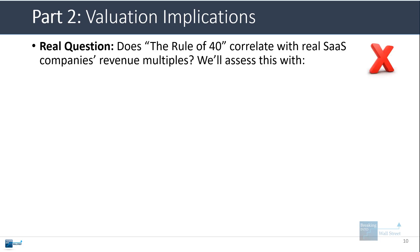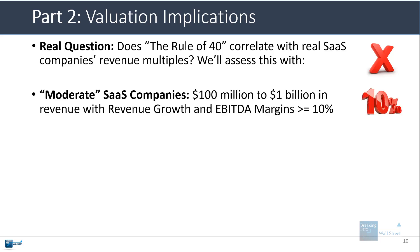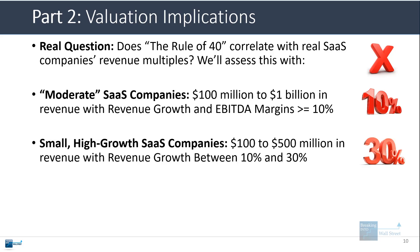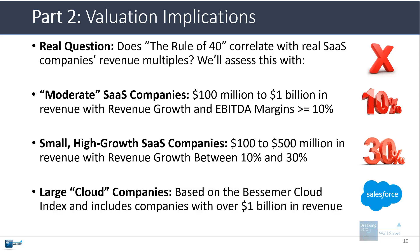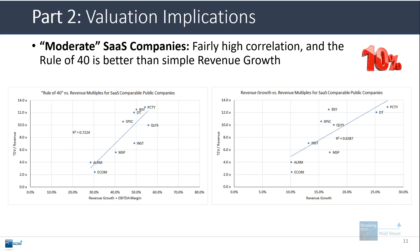Let's talk about valuation implications. A lot of people claim that the rule of 40 correlates with companies' revenue multiples. Looking at a couple of different comparable sets: one with companies between $100 million and $1 billion in revenue with revenue growth and EBITDA margins above 10% — the correlation is actually pretty high here, R-squared is about 0.72, and the revenue growth correlation is about 0.63 or 0.64. So the rule of 40 is definitely better, but the correlation is decently strong for both, at least for a very messy data set like this.